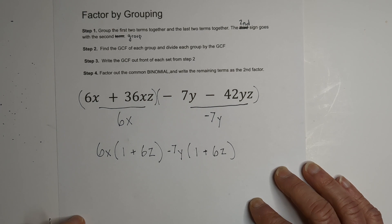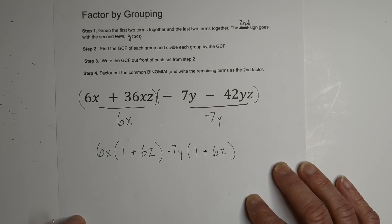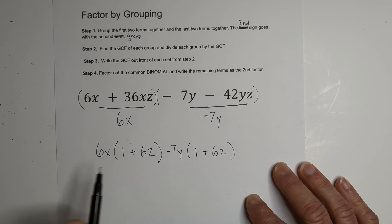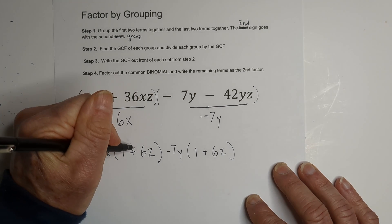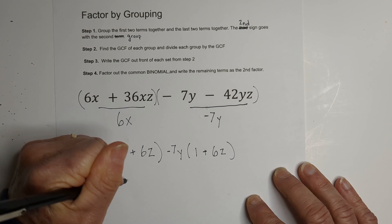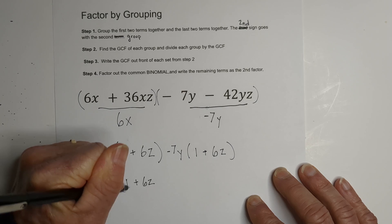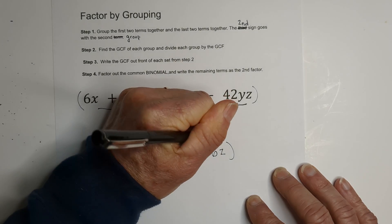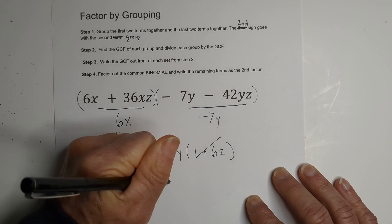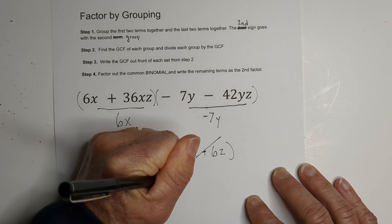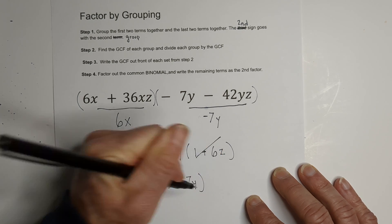Now you know that you can factor by grouping, or if you've done it correctly, if these two are the same. So let's do this. Let's write the matching binomials out front, 1 plus 6z. Let's cancel them out, and what is remaining? We have 6x minus 7y.